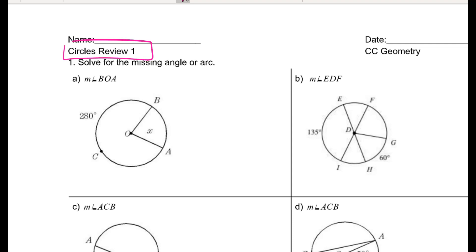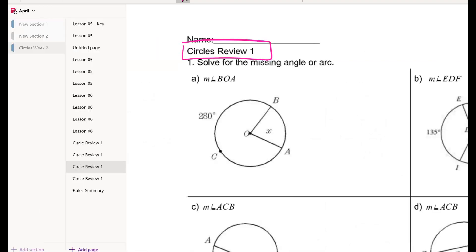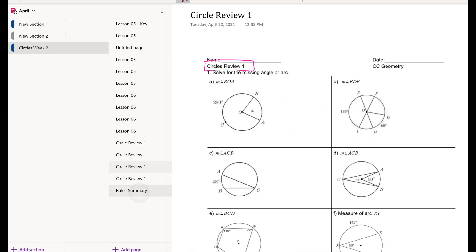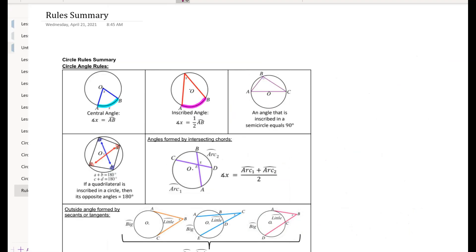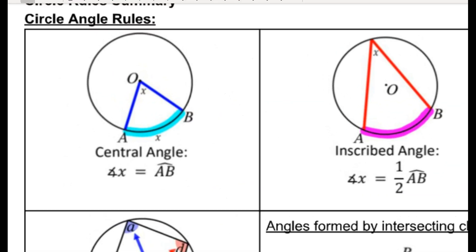In this video, I'm going to go through review one for the circles unit. Remember there are lots of little rules that we need to remember here for angles and segments. As a quick summary, remember that if I have a central angle where its vertex is at the center and the two rays end somewhere on the circle, then the arc intercepted by the angle is the same as the measure of the angle.